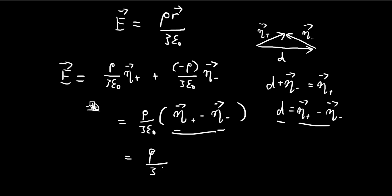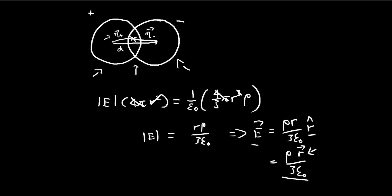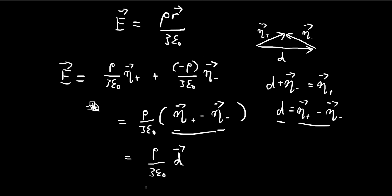So we find the surprising result — I'll give it an arrow to show that it's a vector — that inside the overlapping area the electric field is actually a constant. The electric field within this area is always constant, always pointing in the direction of d. So this is a surprising result: the electric field inside this overlapping area is actually a constant.